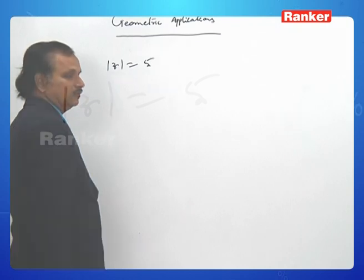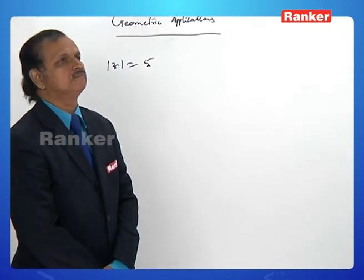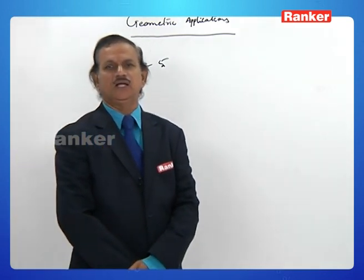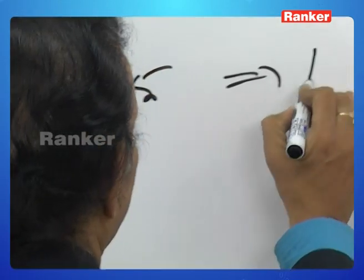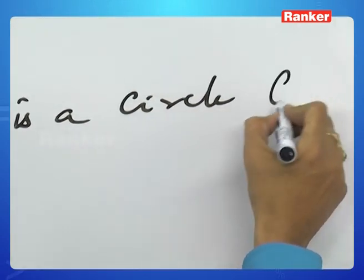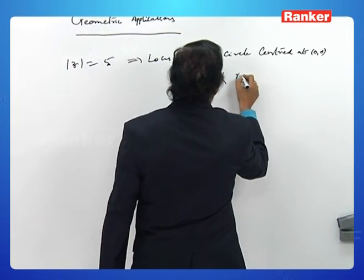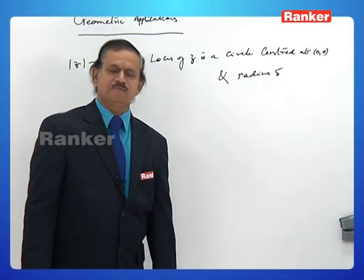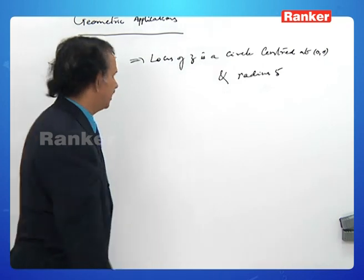|z| = 5: Let z = x + iy. Then √(x² + y²) = 5, so x² + y² = 25. This is a circle with center at the origin and radius 5. In general, |z| = k where k is a positive number is a circle centered at the origin with radius k.